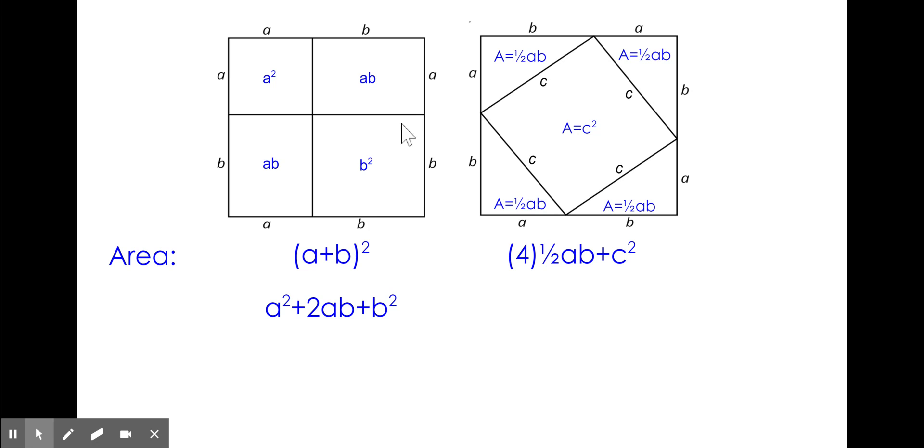We know that these two area expressions are equal to each other because the squares have the same side length. On the right, we can simplify our expression by multiplying 4 times one-half. Lastly, we want to use inverse operations and subtract 2AB from both sides. Doing so, we are left with A squared plus B squared equals C squared, which is the Pythagorean theorem.